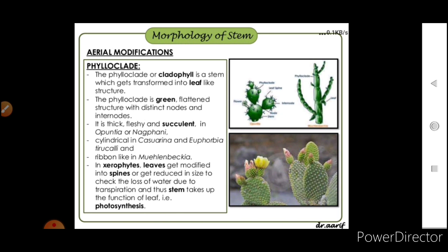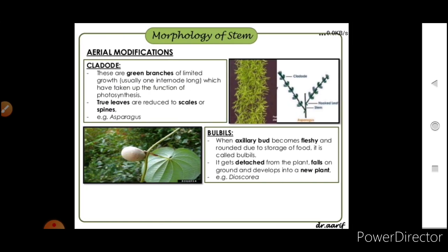Phylloclde (or cladophyll) is a stem which gets transformed into a leaf-like structure. It is a green, flattened structure with distinct nodes and internodes. It is thick, fleshy, and succulent in Opuntia and Euphorbia; cylindrical in Casuarina; and ribbon-like in Muehlenbeckia. In xerophytes, leaves get modified into spines or get reduced in size to check water loss due to transpiration, and the stem takes up the function of photosynthesis — this is called phylloclde. Cladode is a green branch of limited growth, usually one internode long, which has taken up the function of photosynthesis.